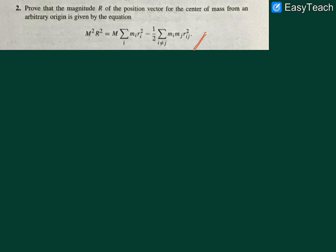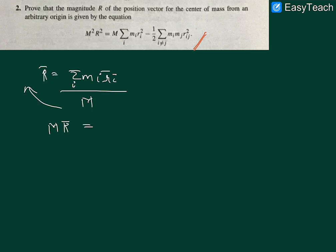The first thing we will use while proving this is the very definition of center of mass. The center of mass is defined as the summation of m_i r_i over the summation over i, divided by M. Taking M over to the left-hand side, M R equals summation of m_i r_i (in vector notation).